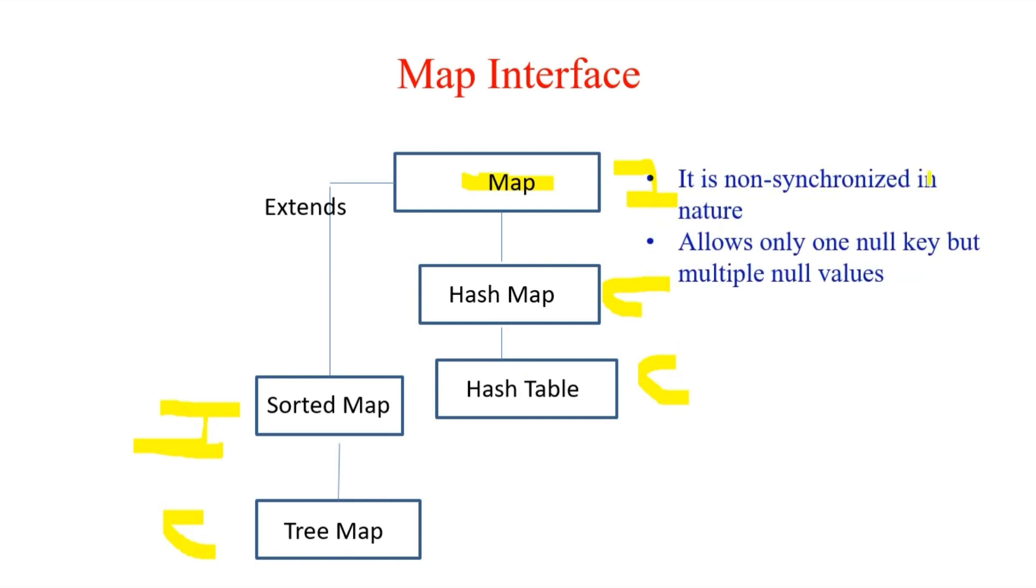HashMap is a non-synchronized collection and it contains only one null key but can contain multiple null values. Why? Because keys are always unique and values may or may not be unique. It's not a necessary condition, but keys for the map should always be a unique element.